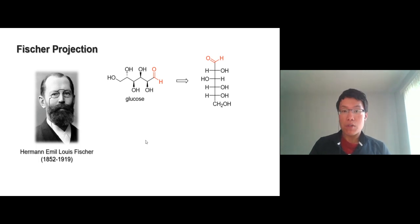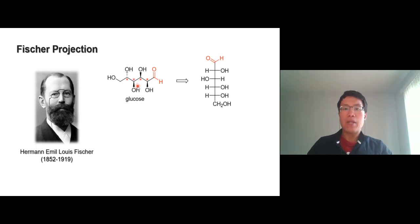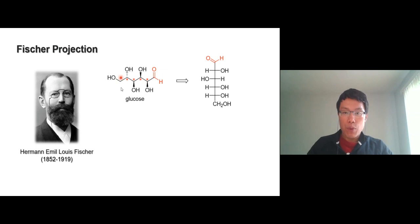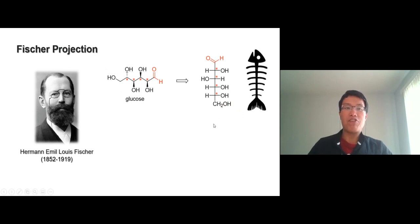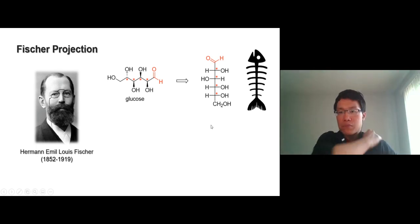Fischer was dealing with compounds with multiple chiral centers — for example, glucose. How many chiral centers are there? One, two, three, four — four total. To draw wedge and dashed lines for all of them is just too many, so he proposed a more convenient way to draw sugar molecules. We have an aldehyde group at the top, then one, two, three, four carbons with OH groups, and a CH2OH at the bottom. It looks like a fishbone.